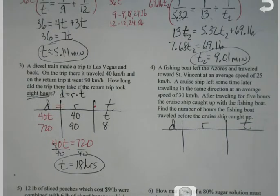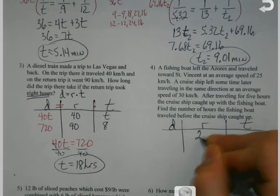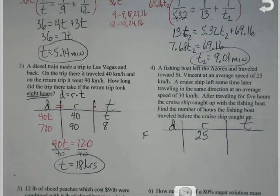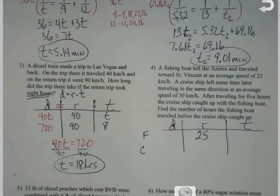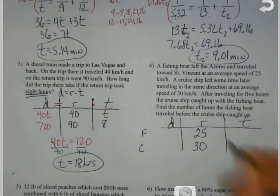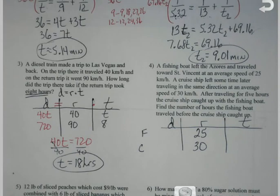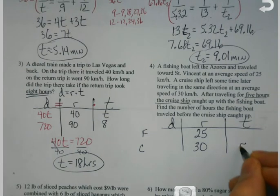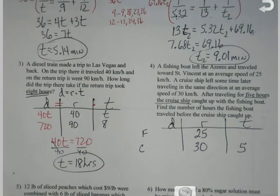Let's see what else we got here. This one's a little bigger. Fishing boat left the Azores and traveled towards St. Vincent at an average speed of 25 kilometers per hour. Okay, so 25. And this is my fishing boat, so I'm just going to make myself a little note out here. A cruise ship, okay, left some time later traveling in the same direction at an average speed of 30 kilometers per hour. After traveling for five hours, the cruise ship, wait, time, cruise ship, five hours. Every bit of information could help me here to make this simple.